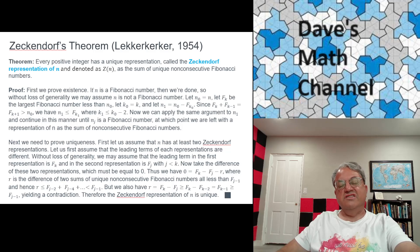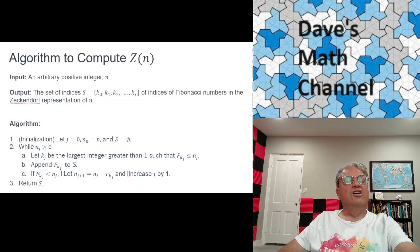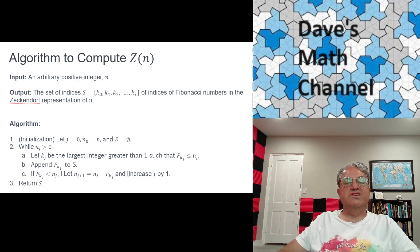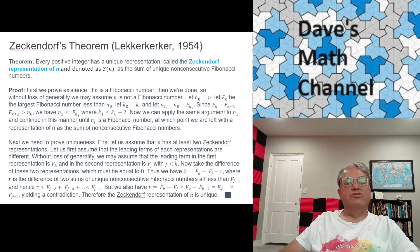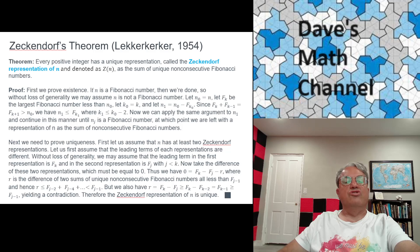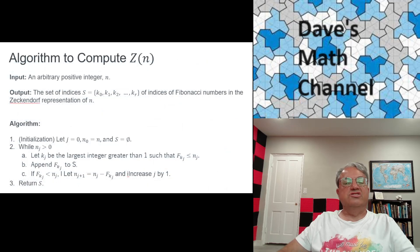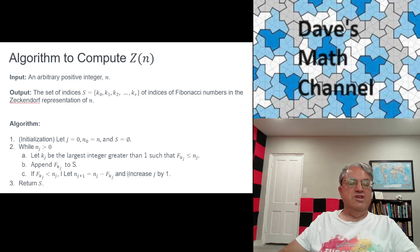That's a nice theorem. If you want to compute the Zeckendorf representation of an arbitrary positive integer, the existence proof already outlined the method: it's the greedy algorithm. Subtract the largest Fibonacci number that's less than or equal to n, then keep doing that.